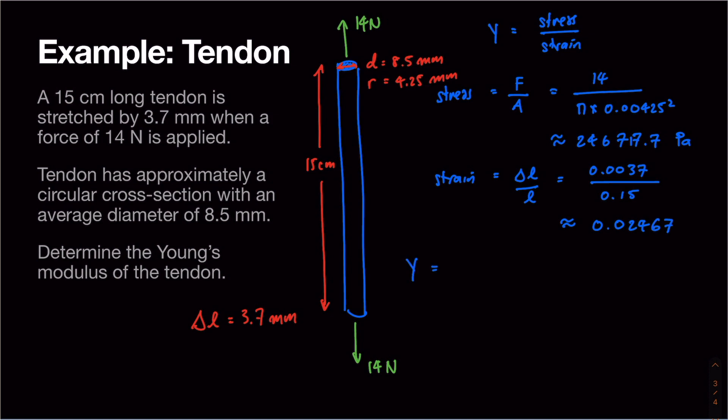So Young's modulus is stress over strain, which is 246,717.7 divided by 0.02467. This gives us a value of approximately 10,000,069 pascals, which is about 10 times 10 to the 6 pascals, or 10 megapascals.